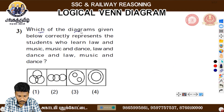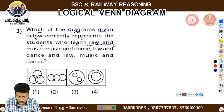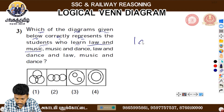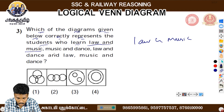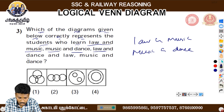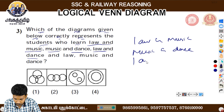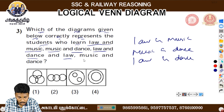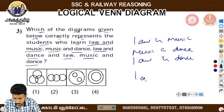This option is the third type — music and dance. That is law and dance. If you see law, music, and dance together, let's go to example 3.